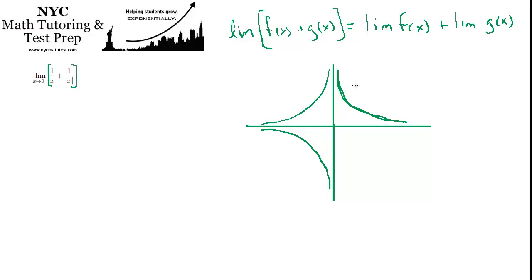So this guy over here is 1 over x. And this guy down here is also part of 1 over x. And this up here is 1 over absolute value of x.